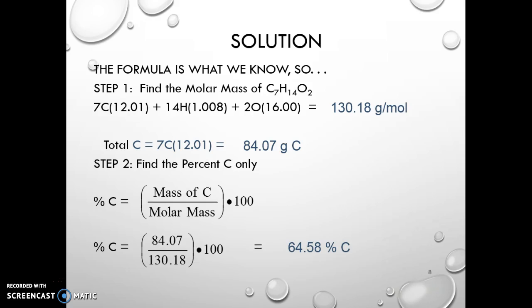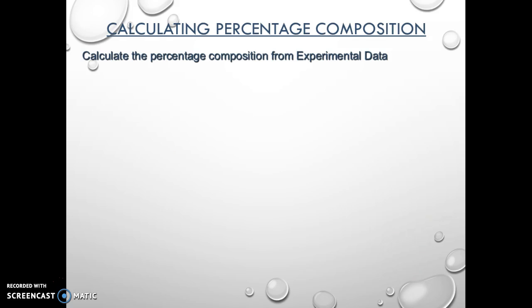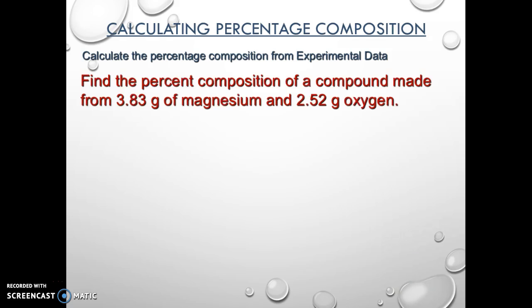So from the formula, it's pretty simple, because we just used the molar mass, same thing that we've been doing already. Now, we're going to complicate it just a bit. So how do we calculate the percent composition from experimental data? In actuality, it's exactly the same process. There's one difference. We don't know the formula. So we don't have that information. So whatever information we're given, we're going to assume it's complete.